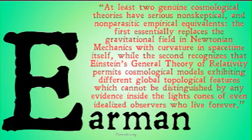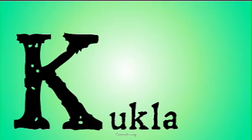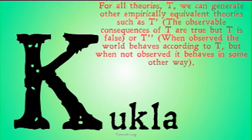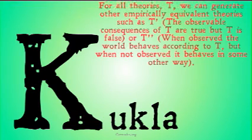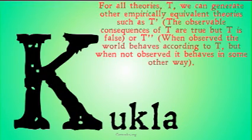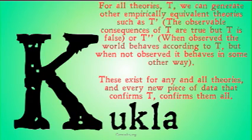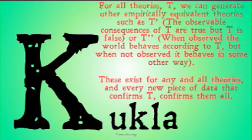Perhaps not all theories have empirical equivalents — but Kukla offers skeptical versions that apply universally. For any theory T, we can generate empirically equivalent theories: T-prime — 'the observable consequences of T are true, but T is false'; and T-double-prime — 'when observed, the world behaves according to T, but when not observed, it behaves in some other way.' All three are empirically equivalent, and every piece of evidence that confirms T confirms them all. None can be shown to be true — none can, by our original definition, be verified.